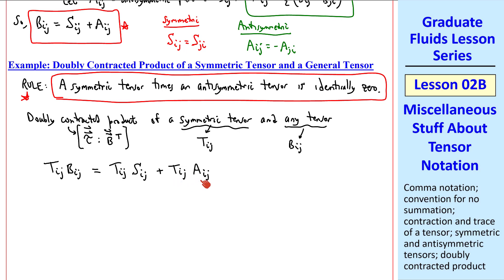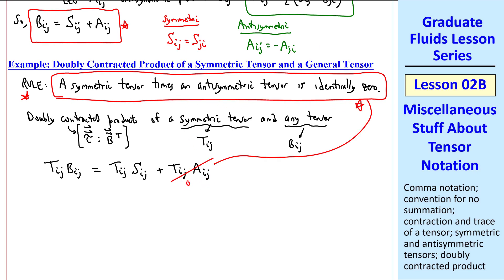Well, we can split up Bij into symmetric and antisymmetric parts. But this is a symmetric tensor times an antisymmetric tensor. And from our rule above, this term goes to zero.